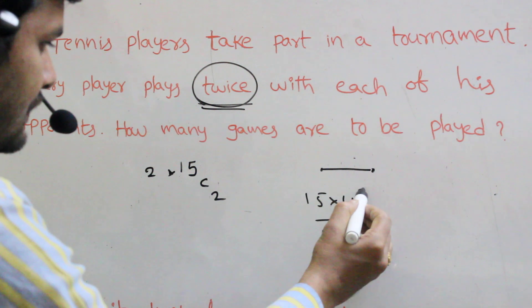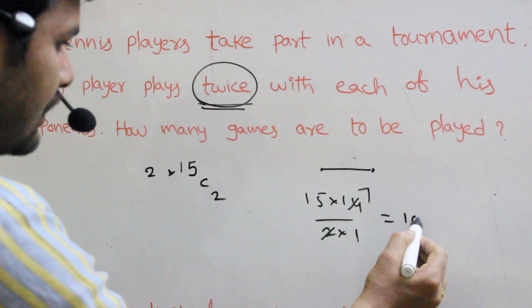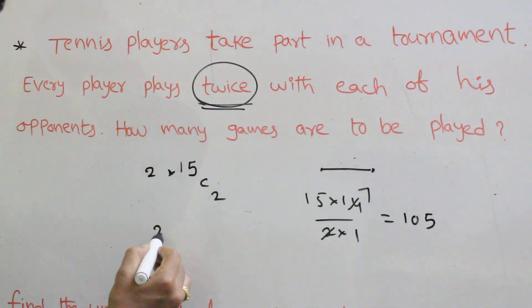Fifteen into fourteen by two into one. Two ones are, sevens are seven to fifty. Two into one not five, that equals two ten. How many games are to be played? Two ten games are to be played.